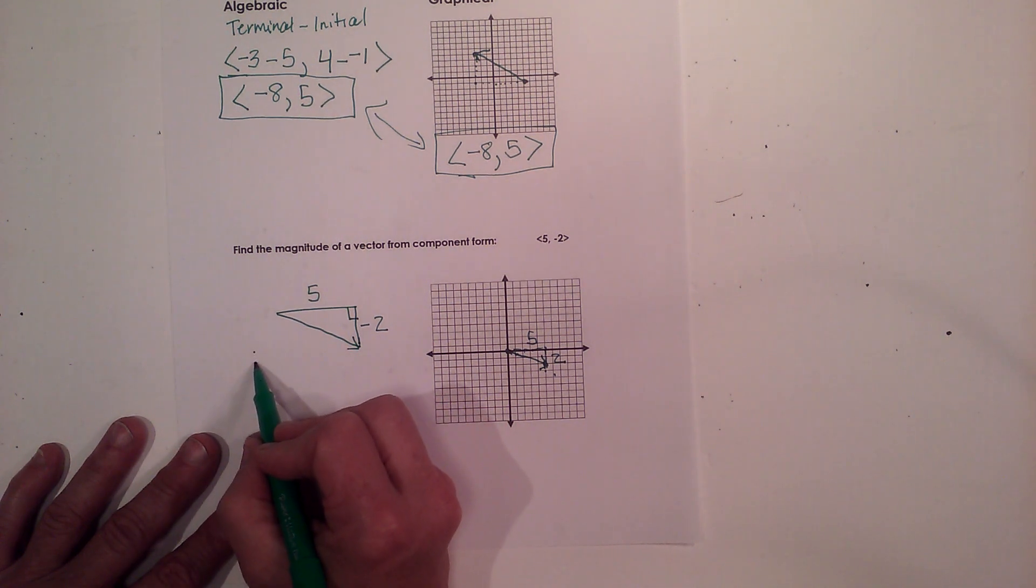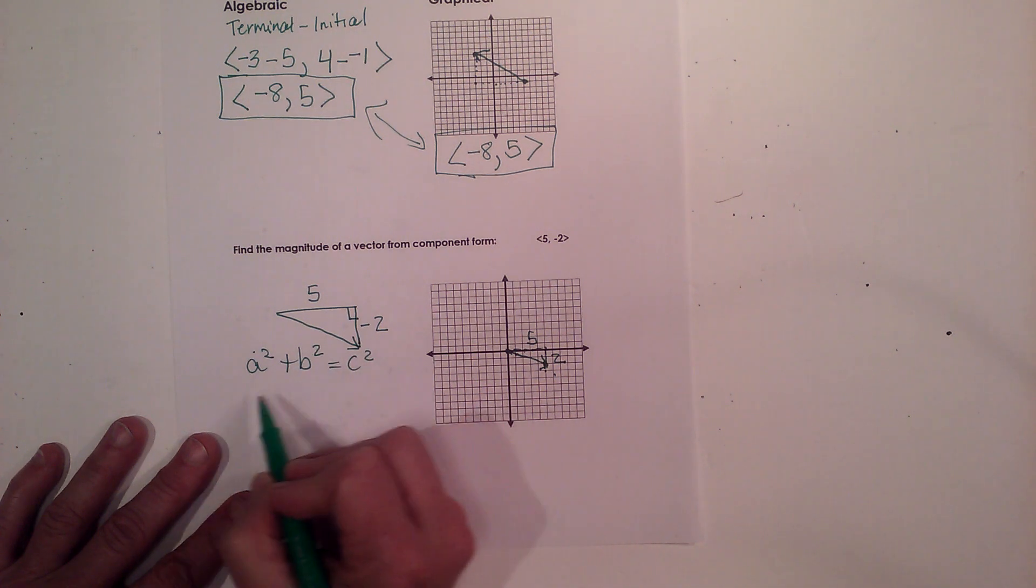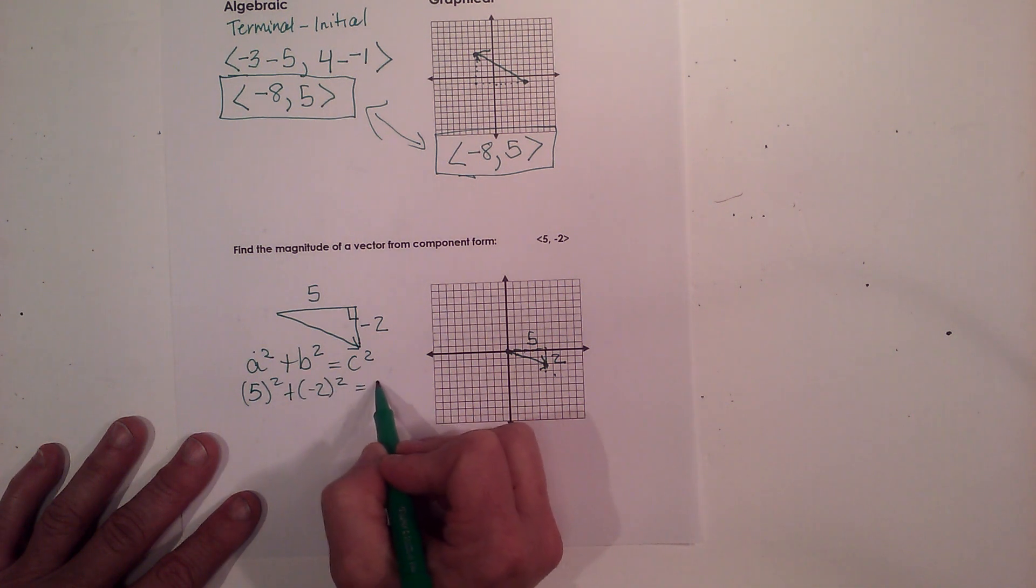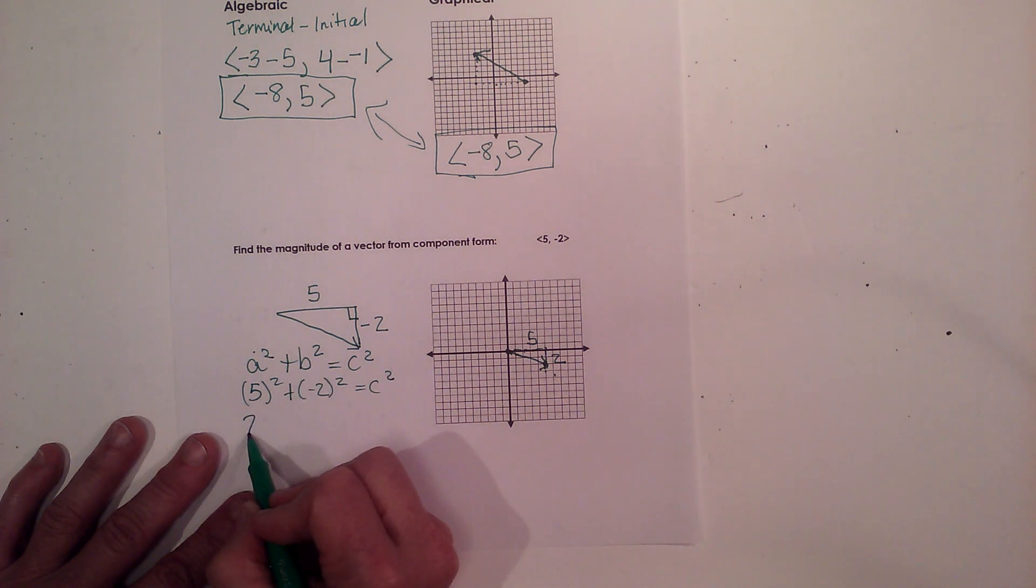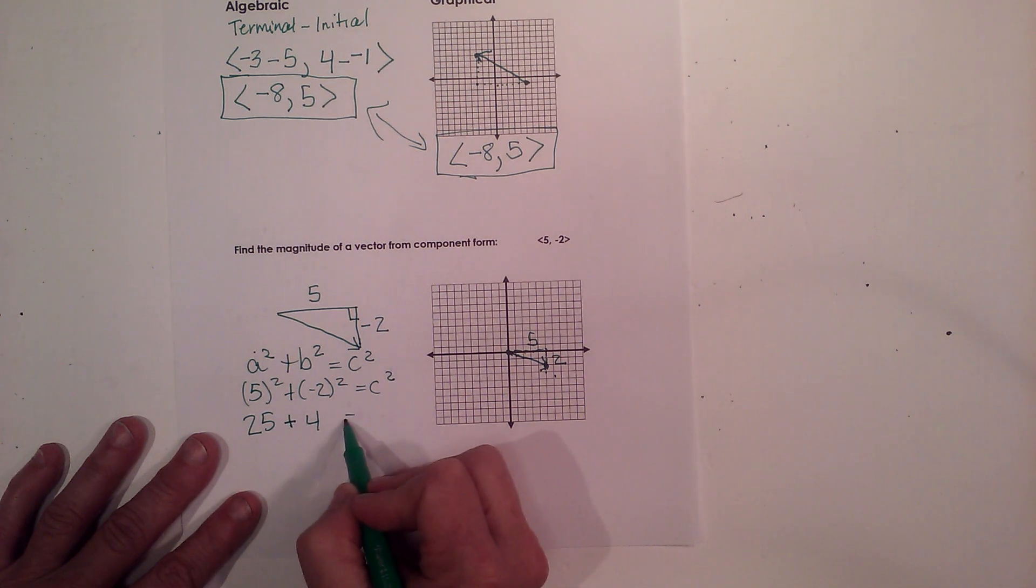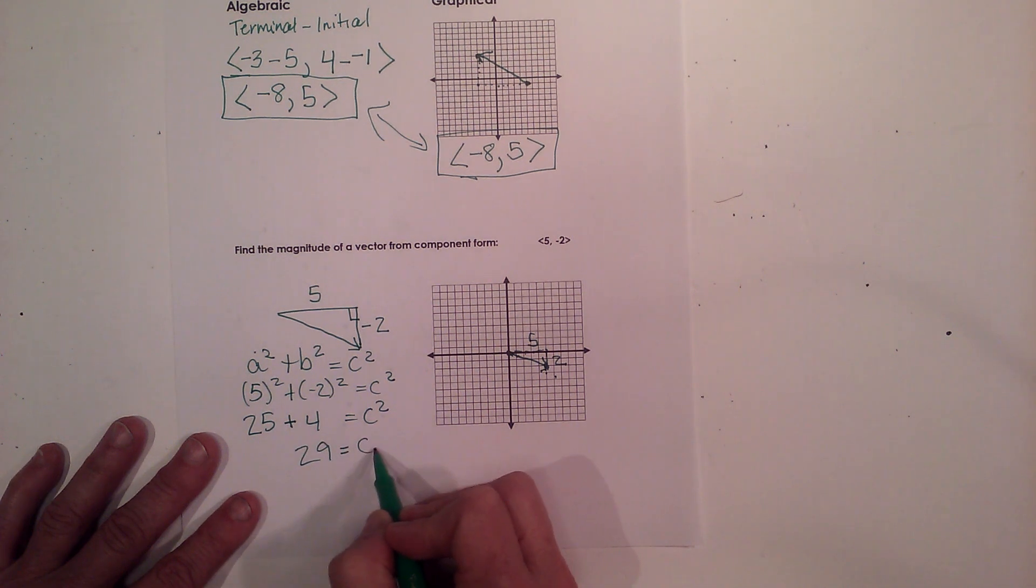So I'm going to use a squared plus b squared equals c squared. So 5 quantity squared plus negative 2 quantity squared equals c squared. So that's 25 plus 4 is equal to c squared. 29 is c squared.